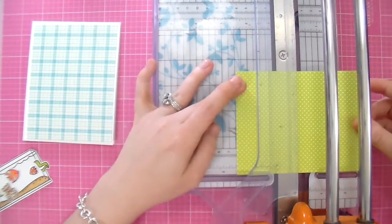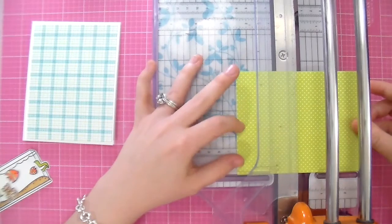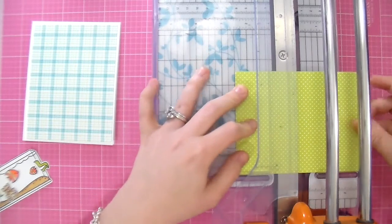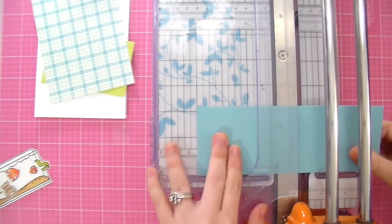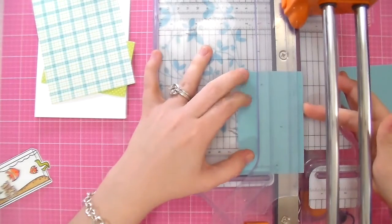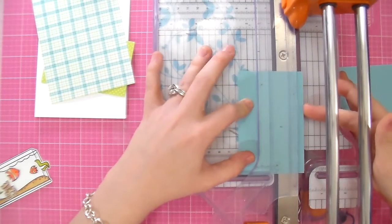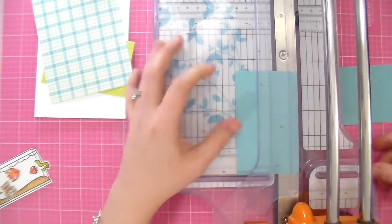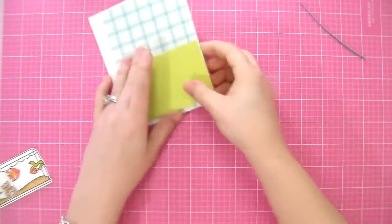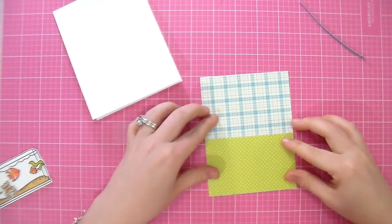I'm starting off here with some new papers from Lawn Fawn, so I have the Perfectly Plaid and the Polka in the Meadow six by six packs. I'm also cutting up some Stampin' Up! Soft Sky paper just to give it a little bit of an accent in the background.